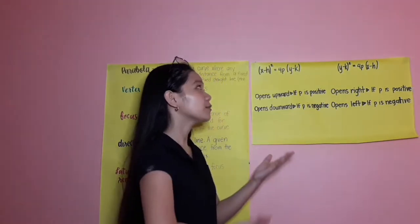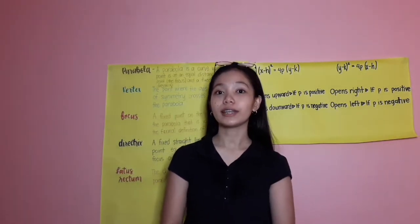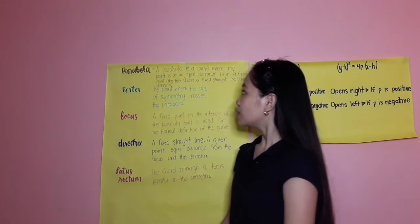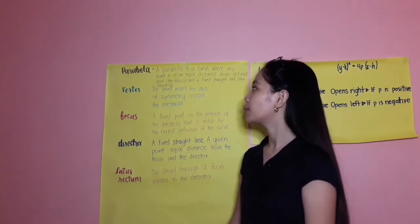In regards to this equation, we have a vertex. So what do you mean vertex? A vertex is a point where the axis of symmetry crosses the parabola.